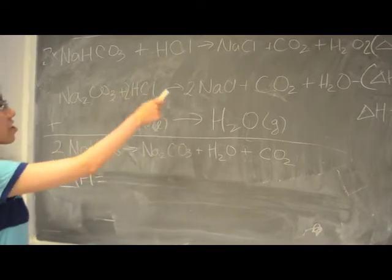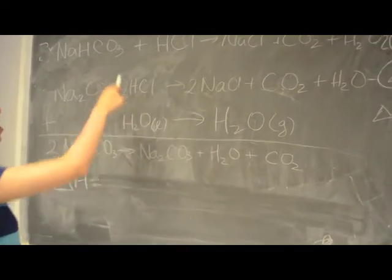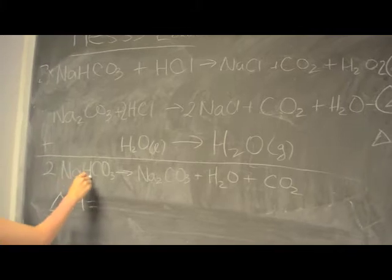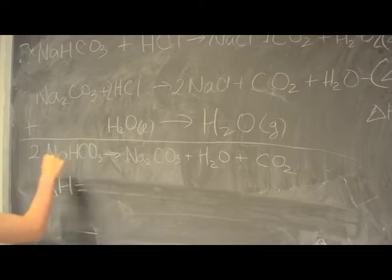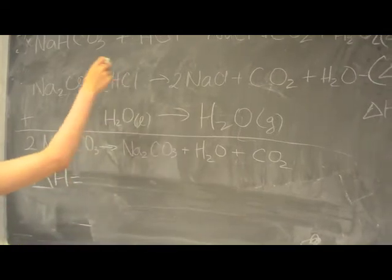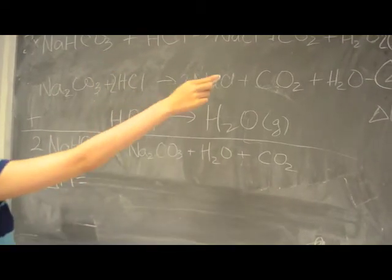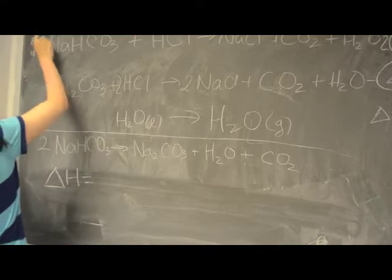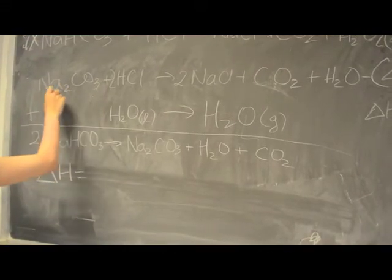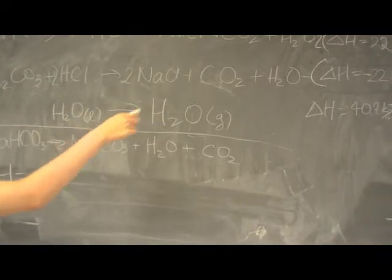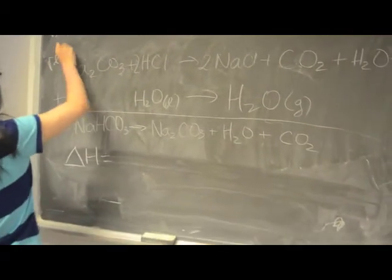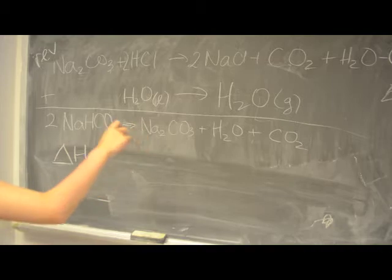After we find delta H for both reactions, we have to use Hess's Law to find the delta H for the final reaction. Since you want to get 2 NaHCO3, you should multiply the reaction and the delta H by 2. For this one, since you want Na2CO3 as the product, you should reverse this reaction and negate the delta H there. Then you add all the delta H's and you should get the result.